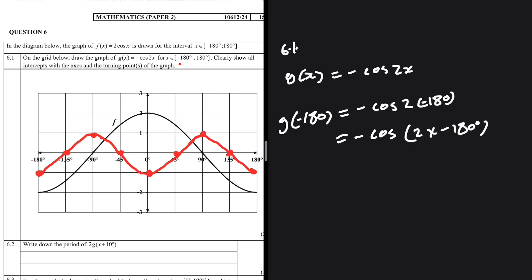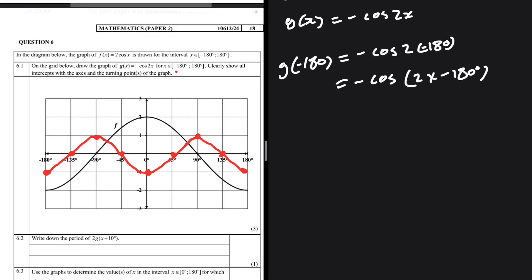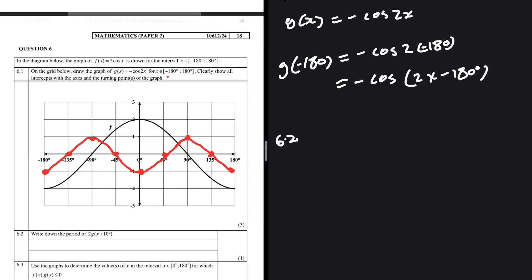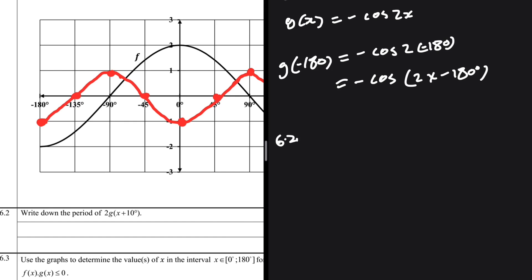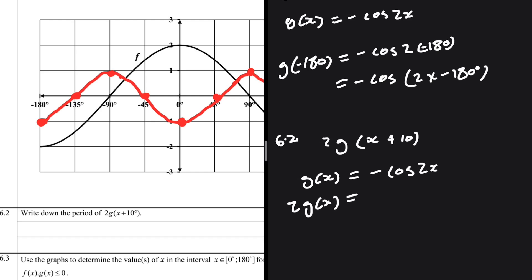Now let's look at question 6.2: write down the period of 2g(x + 10). We know g(x) = -cos(2x). Let's first determine 2g(x): that is 2 multiplied by -cos(2x), which gives -2cos(2x).